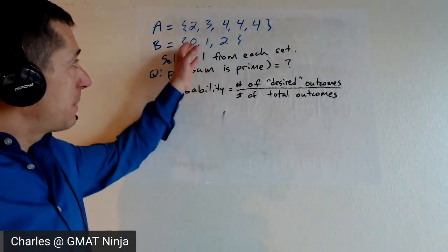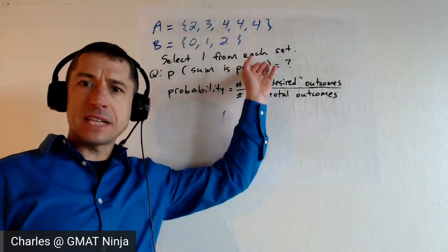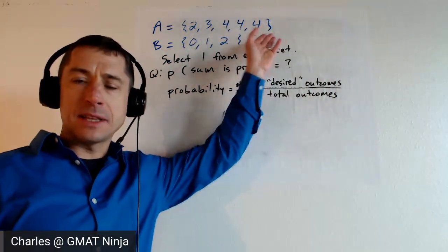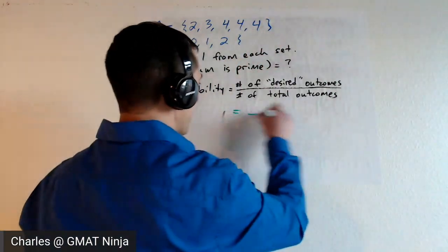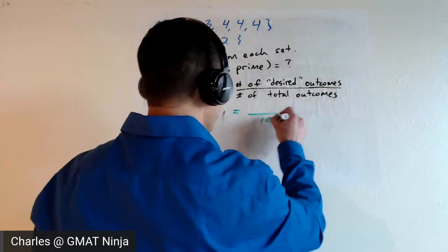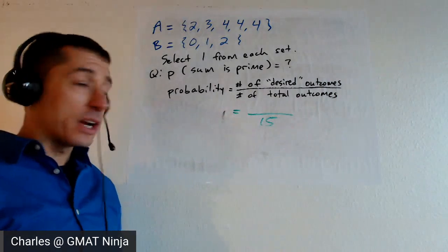Easy enough here, how many total outcomes do we have? Well, it's got to be five times three — five elements in A, three elements in B. So right off the bat, we've got our denominator.